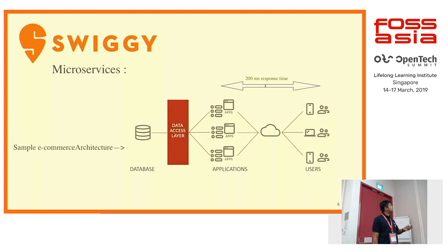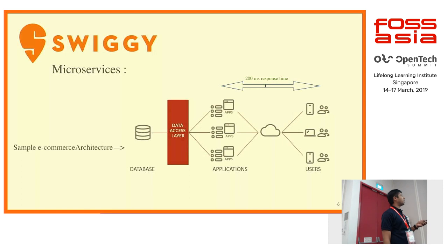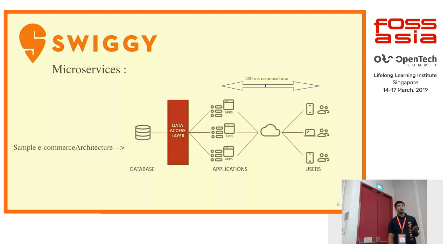This is a sample e-commerce architecture for microservices. Here are small microservices interacting with each other, with common users interacting with the applications. Applications might interact with each other, and your database will be common where it needs to be. In MySQL, the database mostly cannot be separated because of joins, so data needs to remain together. You can have a data access layer in between to optimize certain cases.